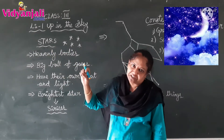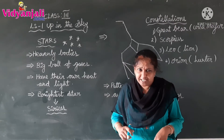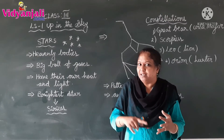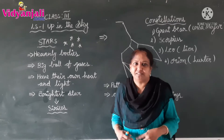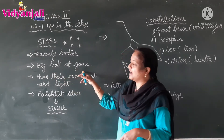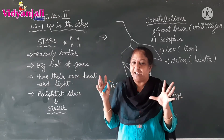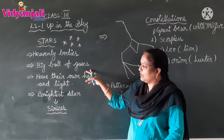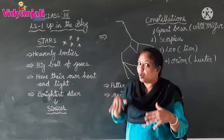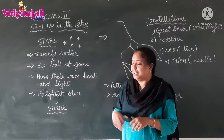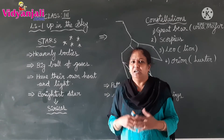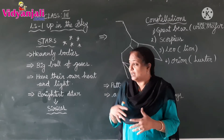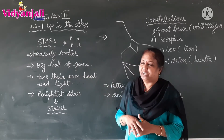Now coming to the next topic: stars. Stars are twinkling in the night sky. Did you observe, children? Stars are also known as heavenly bodies. The sun, the moon, and the stars are called heavenly bodies. These stars are big balls of gases — they are releasing hot gases and they have their own heat and light. The moon and the planets are not having their own heat and light, but stars are having their own heat and light.